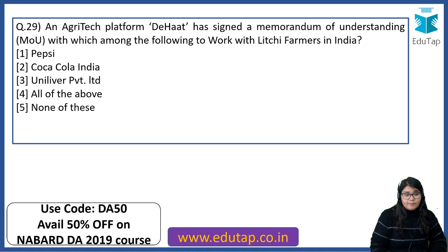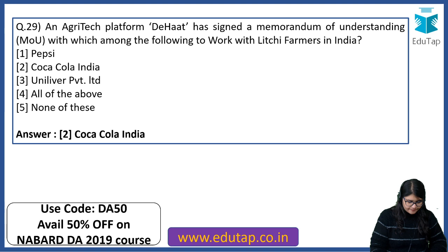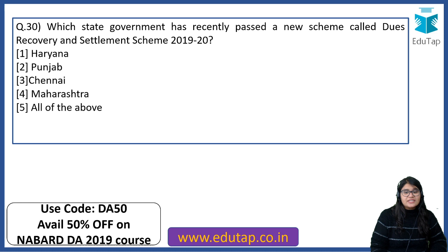Agri Tech Platform Dehat has signed a Memorandum of Understanding with which company to work with lychee farmers in India? These questions are very easy but sometimes we tend to not cover them. Since there is special reference to agriculture, it is important to do these questions. The answer is Coca-Cola India. Which state government recently passed a new scheme called Dues Recovery and Settlement Scheme 2019-20? The right answer is Punjab.